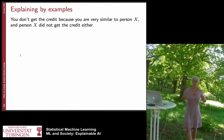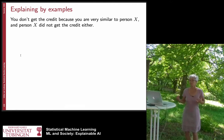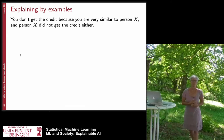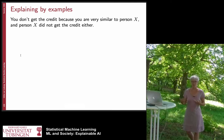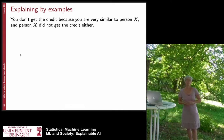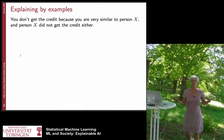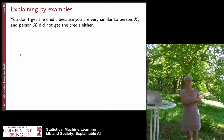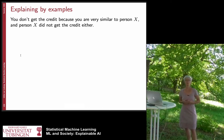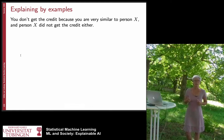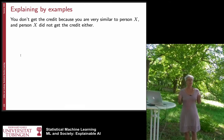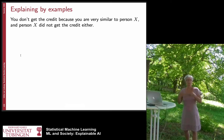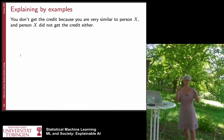Explaining by examples: the typical thing is to say to a person who doesn't get the credit that they don't get it because they are very similar to this other person X, and person X didn't get the credit either. This might not be a completely satisfactory answer, but at least it gives some kind of reasoning. In a medical case it could also be very helpful — you say to the doctor, this patient has these particular symptoms because they're very similar to another patient who had the same symptoms, and treatment A helped that person, so maybe it will help this one too. This is a simple mechanism based on neighborhood argumentation.